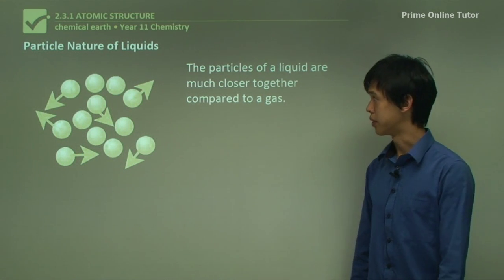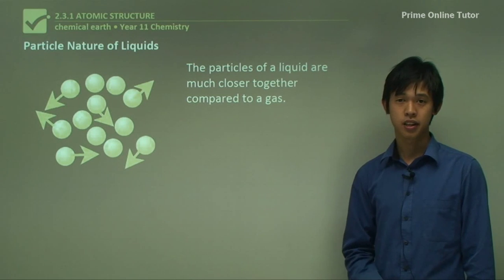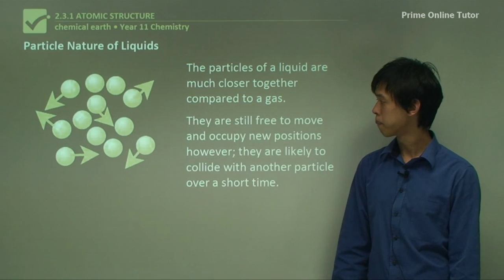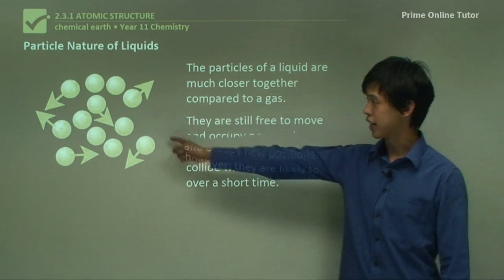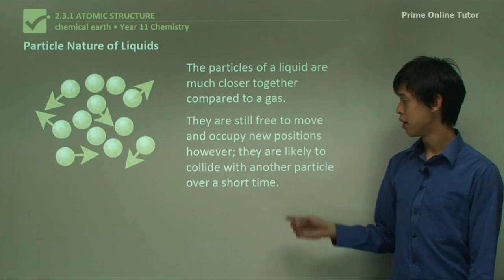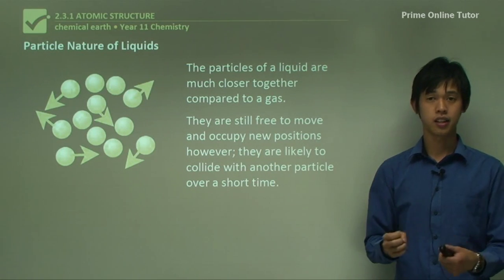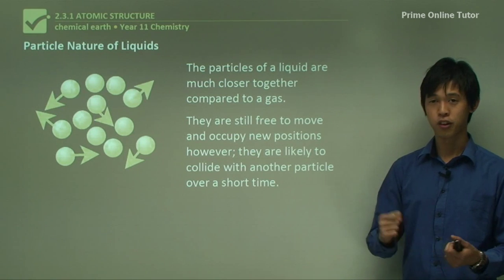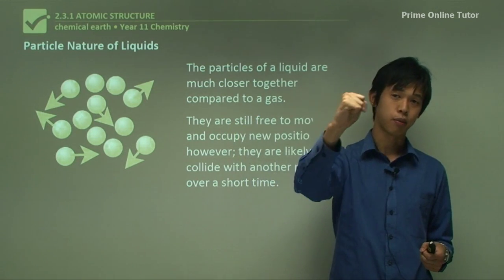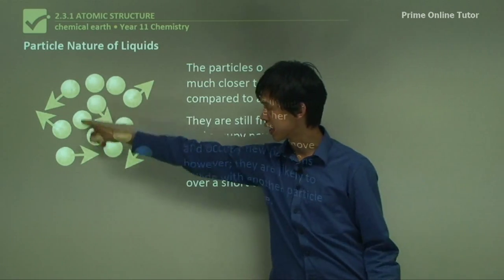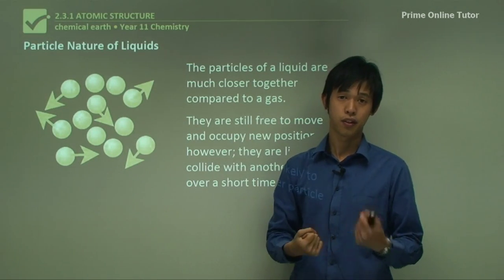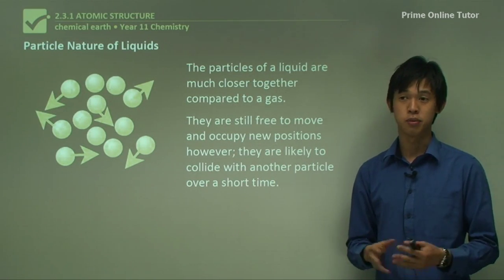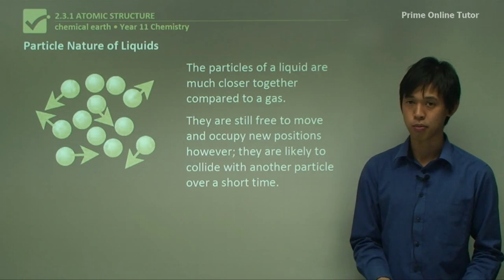The particles of a liquid are much closer together compared to a gas — you can see very little space between each particle. They're still free to move wherever they want, but because they're so close together, they're likely to collide with other particles in a very short time. A gas particle could spend a long time traveling before hitting anything, but in a liquid you're very likely to hit something very rapidly — they collide more frequently and don't have as much freedom to move.